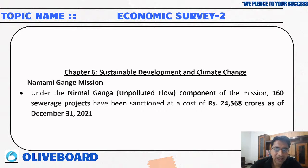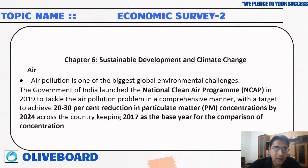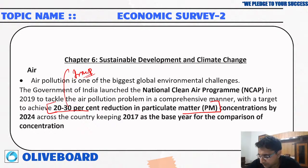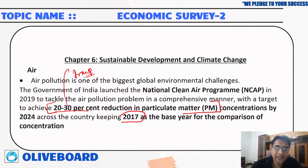Under Nirmal Ganga, 160 sewerage projects have been sanctioned at a cost of rupees 24,568 crore till December. Regarding air pollution, India has launched the National Clean Air Programme. The target is to achieve 20 to 30 percent reduction in particulate matter concentration by 2024, keeping 2017 as the base year.